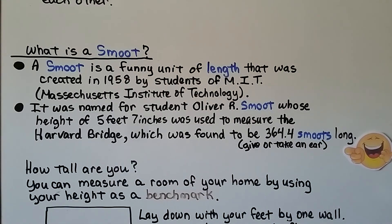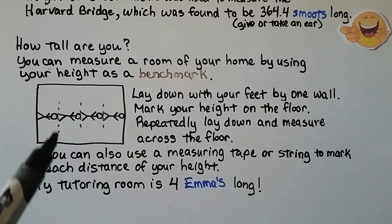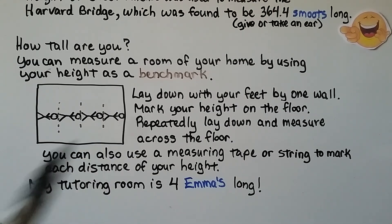Have you ever heard of a Smoot? A Smoot is a funny unit of length created in 1958 by students of MIT — the Massachusetts Institute of Technology. It was named for a student, Oliver R. Smoot, whose height of 5 feet 7 inches was used to measure the Harvard Bridge, which was found to be 364 and 4 tenths Smoots long, give or take an ear. So they used Oliver Smoot as a benchmark. You can measure a room of your home by using your height as a benchmark — lay down with your feet by one wall, mark your height on the floor, and repeatedly lay down to measure across. We can also use a measuring tape or string. My tutoring room is four Emmas long.